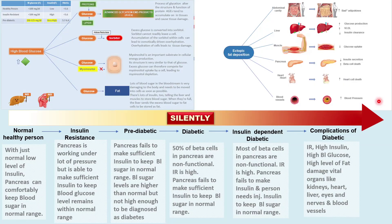During this period, advanced glycation end products, sorbitol, high triglycerides, high small dense LDL cholesterol particles, and pro-inflammatory adipokines damage vital organs like the liver, kidneys, pancreas, heart, blood vessels, and nerves. Complications due to diabetes may arise early, even in the pre-diabetic stage.